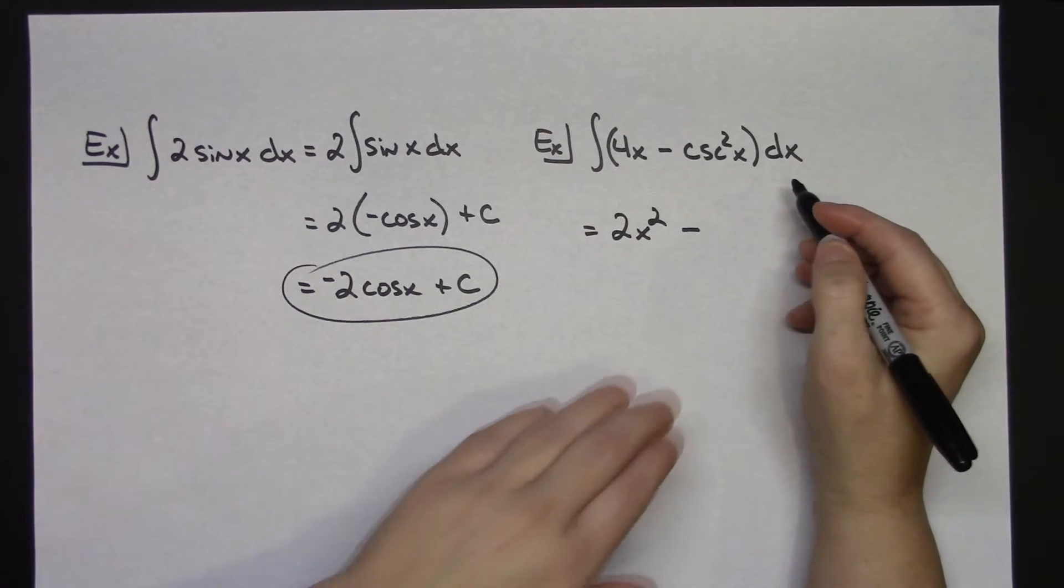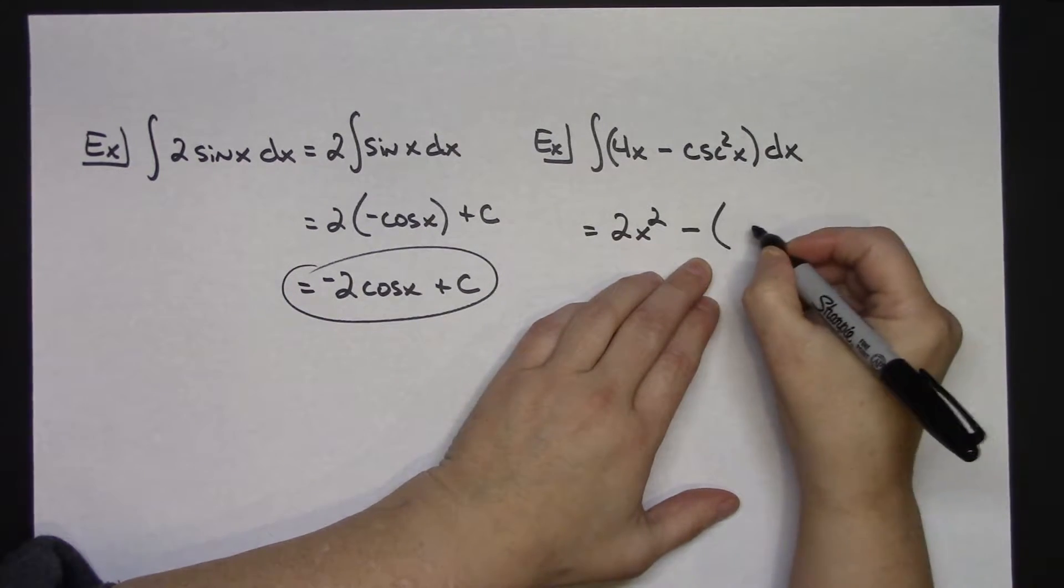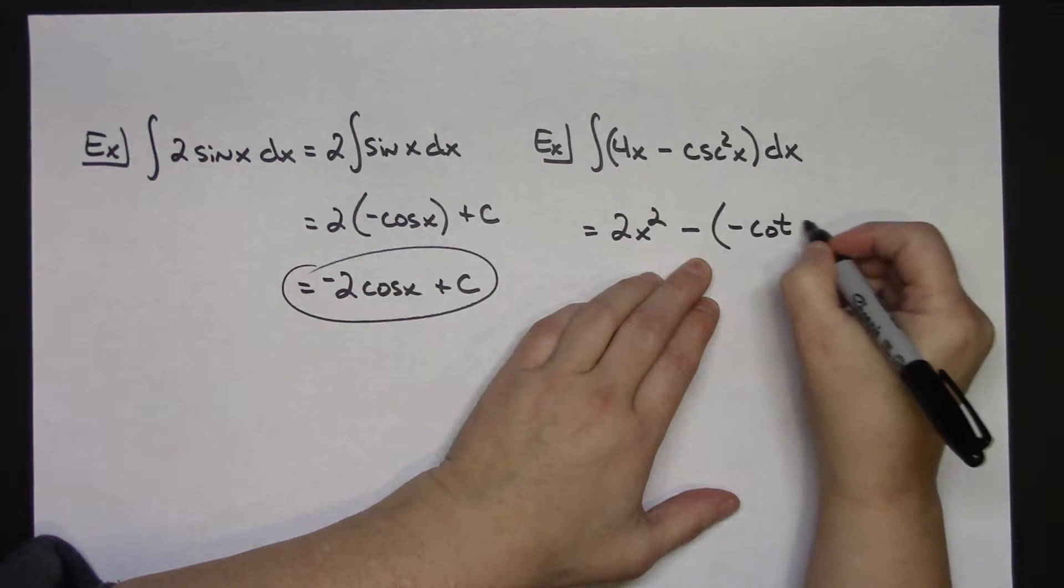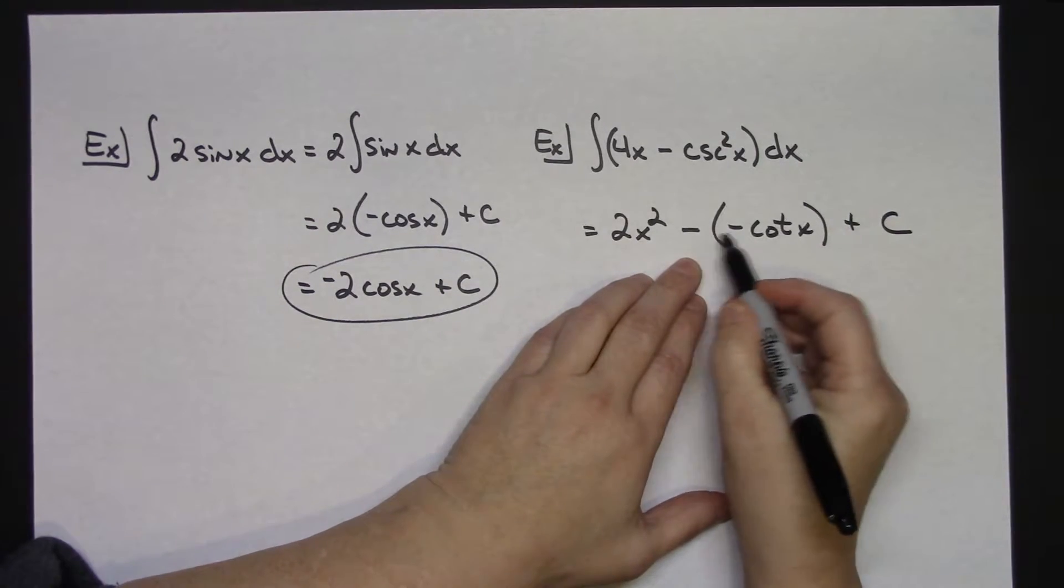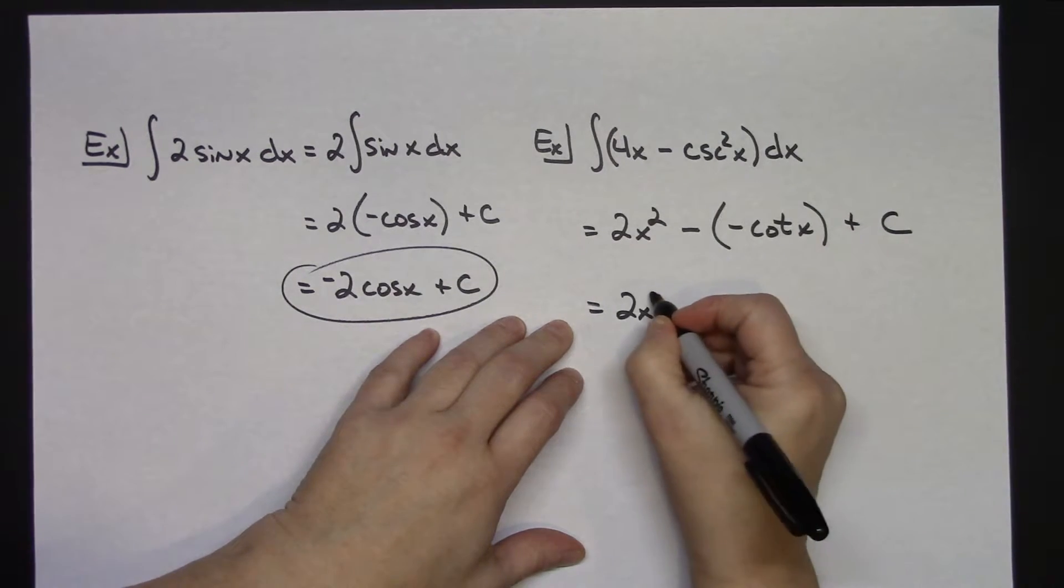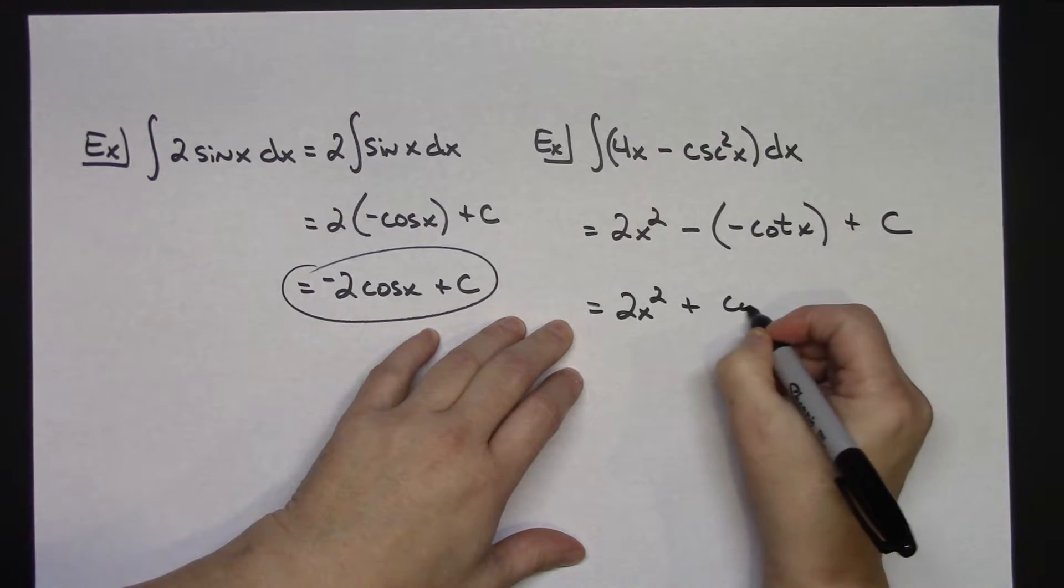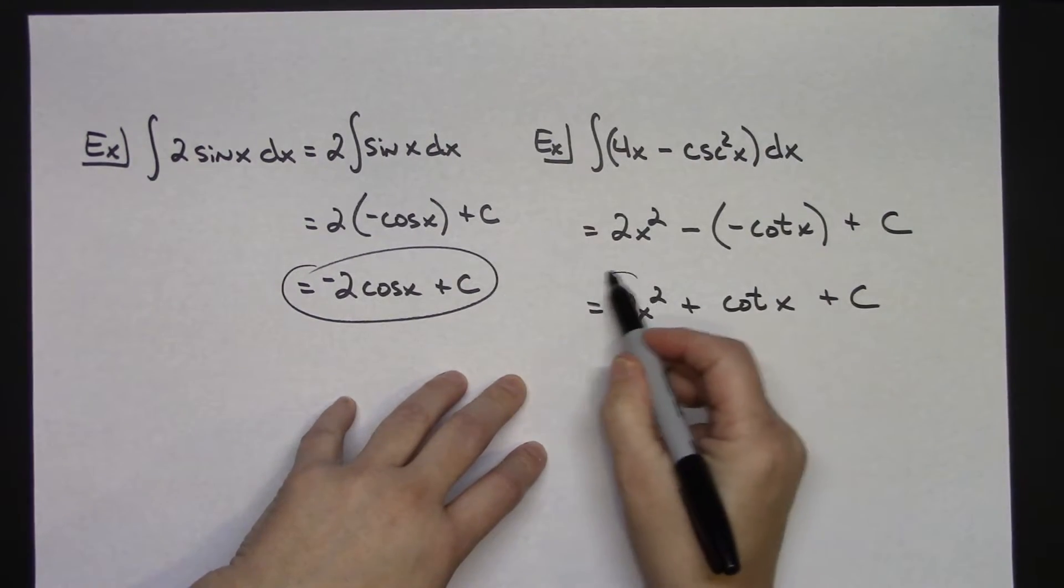Now the minus sign I'm going to keep for right now when I integrate cosecant squared x. If you have them memorized at this point, that one is negative cotangent x, and then plus c because I've done my integration. And then of course, you're going to want to clean that up a little bit, and then you'll have 2x squared plus cotangent x plus c.